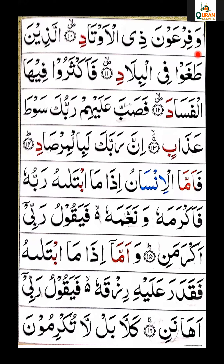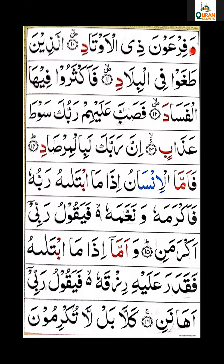واؤ زبر، عون — واؤ ساکن ہے اور اس سے پہلے زبر کی جائے، اس وجہ سے یہاں پر واؤ لین ہوگا۔ اس کو ہم جلدی سے آدھا کرتے ہیں، کھینچتے نہیں ہیں — ایسے کھینچنا نہیں ہے، جلدی سے پڑھنا ہے۔ نون زبر — نا۔ وَفِرْعَوْنَ۔